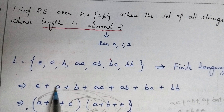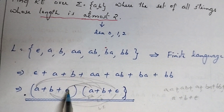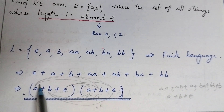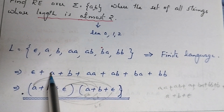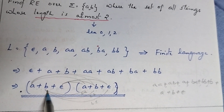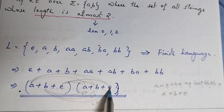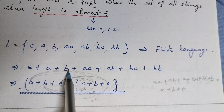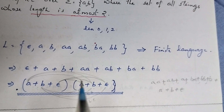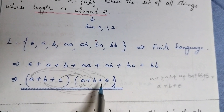Performing the union: epsilon ∪ a ∪ b ∪ aa ∪ ab ∪ ba ∪ bb. Using normal mathematics we can simplify and write this as (a+b+ε)(a+b+ε). Checking: a·a = aa, a·b = ab, b·a = ba, b·b = bb, a·ε = a, b·ε = b, ε·a = a, ε·ε = ε. Taking union, repeated strings appear only once. This is the regular expression for this particular problem.